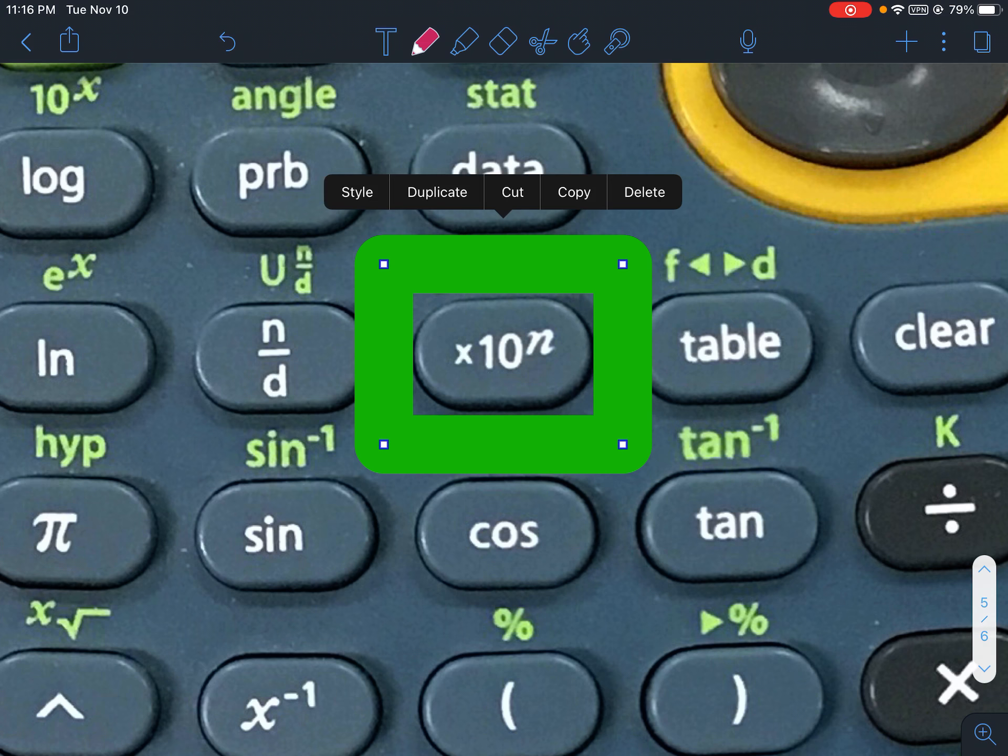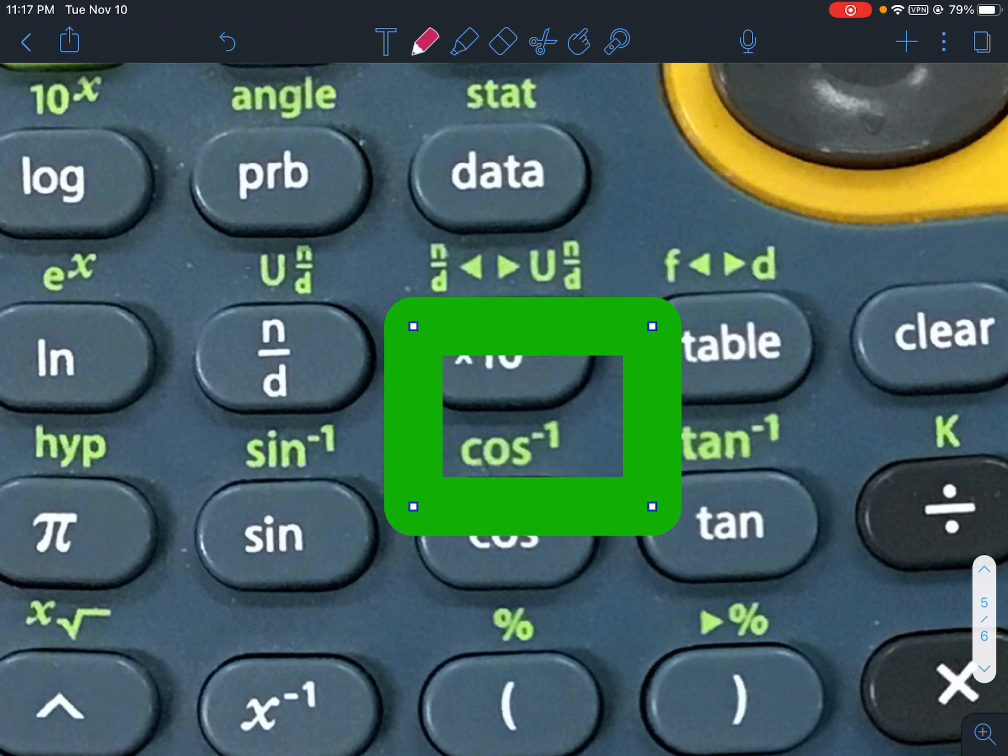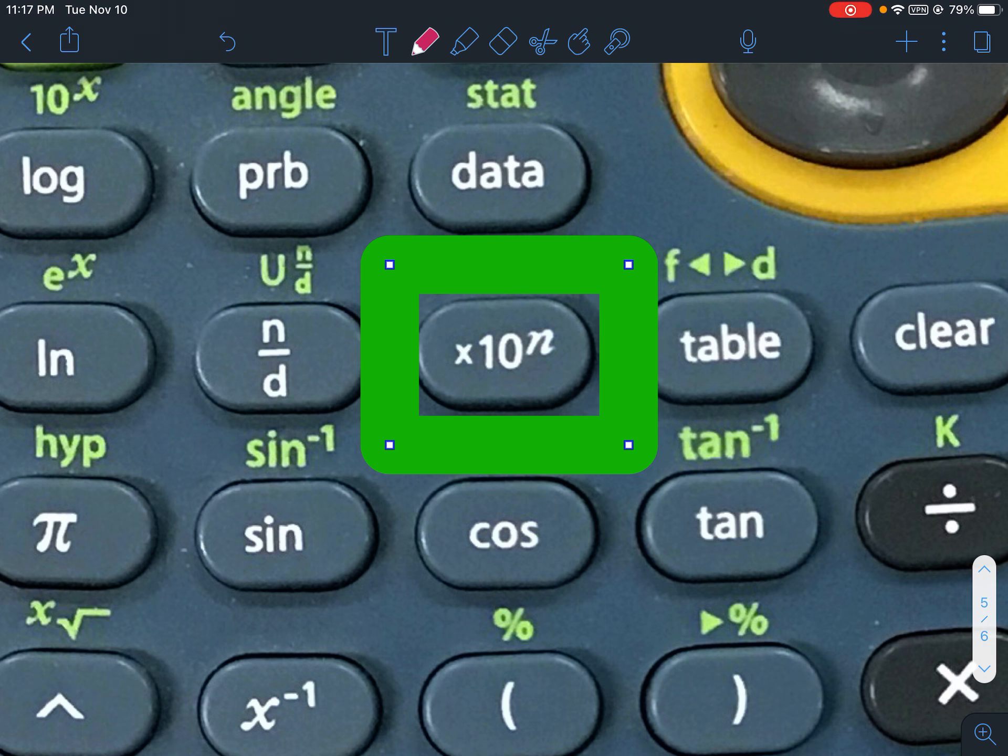We've used that already. We've used that when we were taking and going from an improper fraction to a mixed number. I said times 10 to the nth multiple times. That is the scientific notation button. And what it does, it allows you to quickly put in your calculator scientific notation.